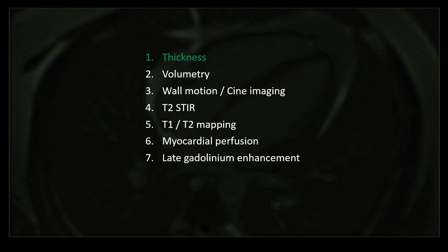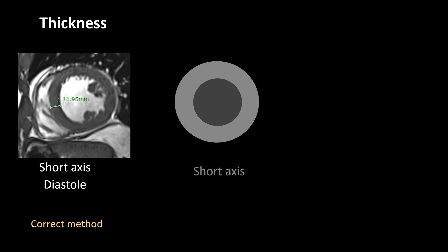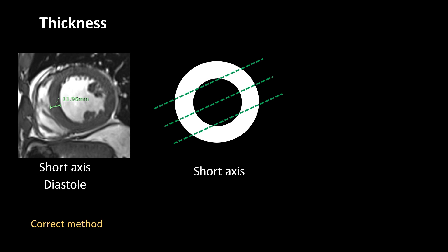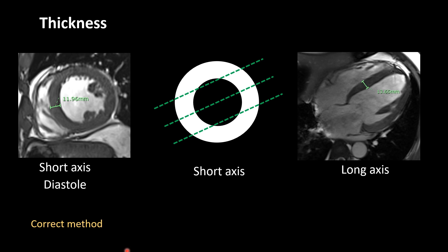First, coming to thickness of the myocardium. This is how thickness should be measured in short axis and in diastole. When we take oblique sections of the myocardium of the left ventricle, we get the four chamber long axis view. If you measure the thickness in these slices, it is not equal across slices, so this is not a very correct method. It is better to measure in short axis view.